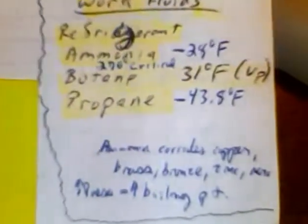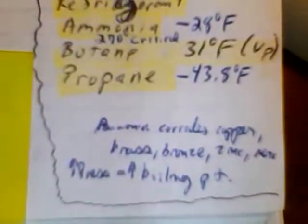Partly because ammonia corrodes copper, brass, bronze, and zinc. And increasing the pressure will also increase the boiling point.